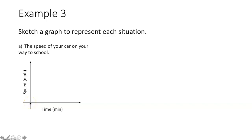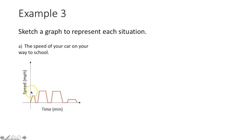Think about it: you get in your car, head down your residential street, and speed up until you reach the speed limit. Then you hold that speed until you hit a stop sign — you slow down and stop. You turn onto a main street, speed up to 45 mph, hold it, then slow down for a red light and stop at zero. The light turns green, you speed up again, hold the limit, hit another red light, stop, speed up, and approach school. Near school you slow to 25 mph and then stop in the parking lot. That's where this graph comes from.